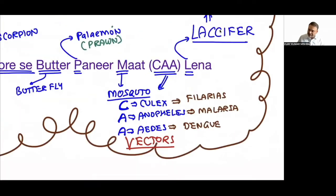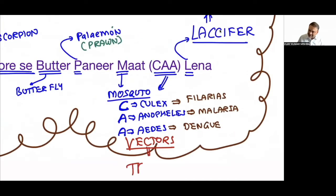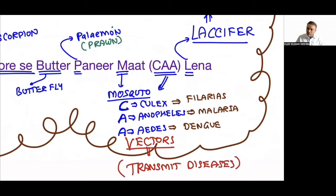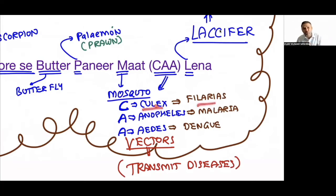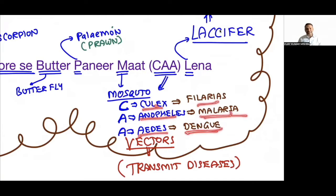Mosquitoes act as vectors — they transmit diseases, not cause them. Culex spreads filariasis (also called elephantiasis), Anopheles spreads malaria, and Aedes spreads dengue fever. Filariasis is also discussed in unit number 8. Laccifer is the lac insect; India is a major producer of lac culture. Most arthropod examples are discussed in detail in unit number 8 (enhancement of food production).